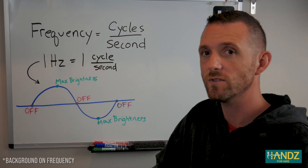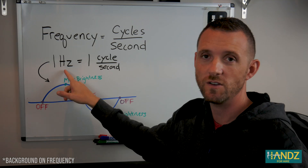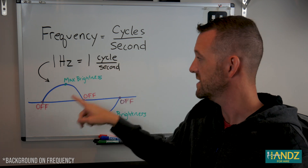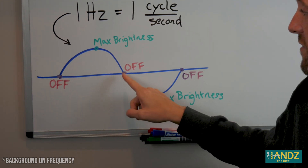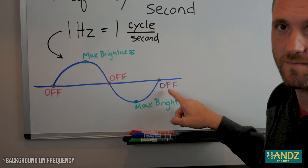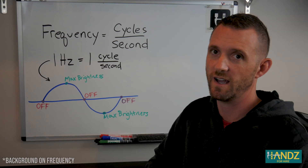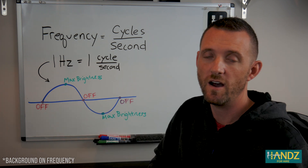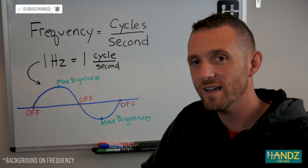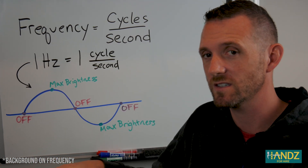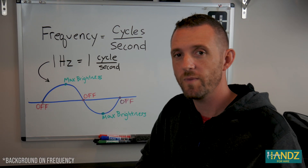Frequency is the amount of cycles per second and alternating current works in this way. If one Hertz — the unit for frequency — is equal to one cycle per second, it would look like: off, max brightness, off, max brightness, and then off again. It does this full cycle 60 times per second, so we actually see max brightness about 120 times per second. Our eyes can pick up a maximum of 80 Hertz, so in the US we use alternating current at 60 Hertz — you're getting 120 maximums per second — so our eyes don't pick up a flicker.